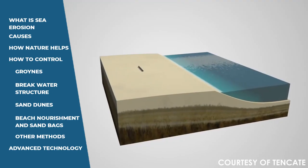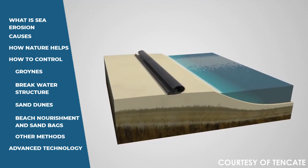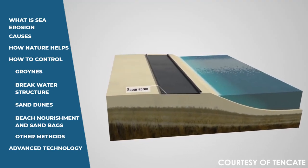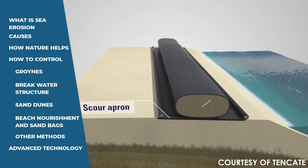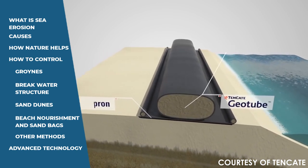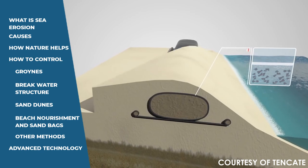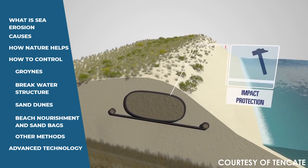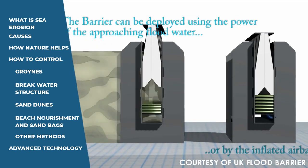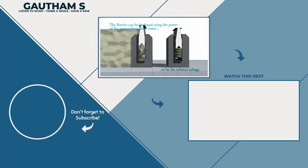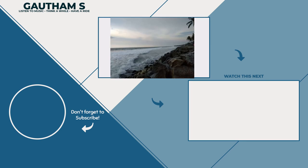Currently, some advanced technologies are available. Geocontainer tubes have a property of absorbing impact energy, so by using them, sea wave energy can be reduced and the original beach atmosphere can be recreated over it. The SAFB system is an automatic system whose barriers rise during a rise in water level.